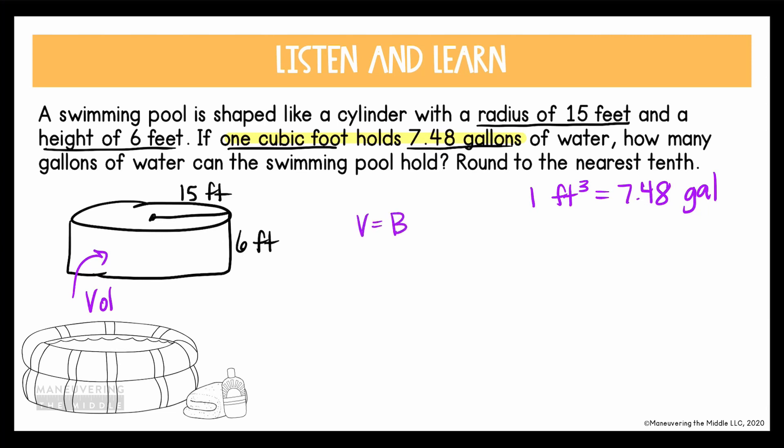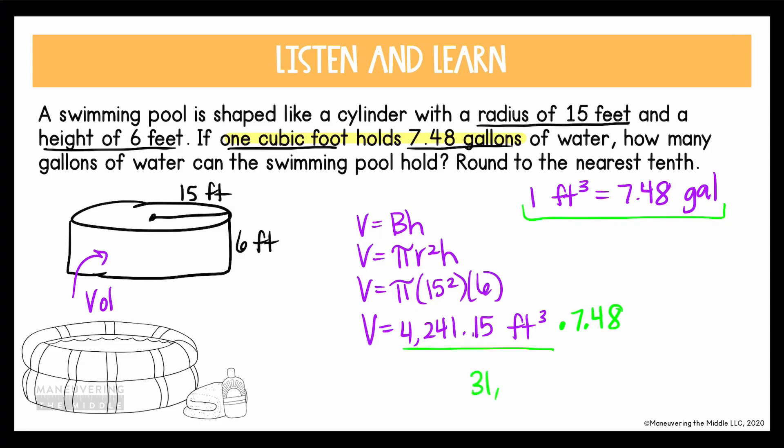Let's go over here and write out our work. So the volume is the area of the base times the height. Filling in what we know, the radius is 15 and the height is 6. Okay, when we multiply through, the volume of the pool is 4,241.15 cubic feet. So go back and think about this conversion. If every cubic foot holds 7.48 gallons, then we wanna take the number of cubic feet in the pool and multiply it by 7.48. If we do that, then the answer to the question is that the pool can hold 31,723.8 gallons of water.